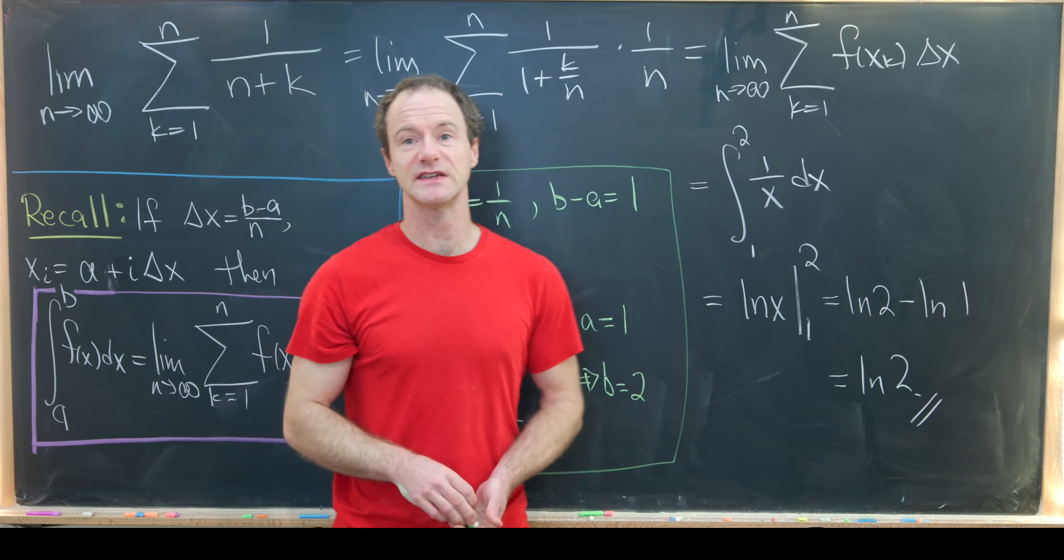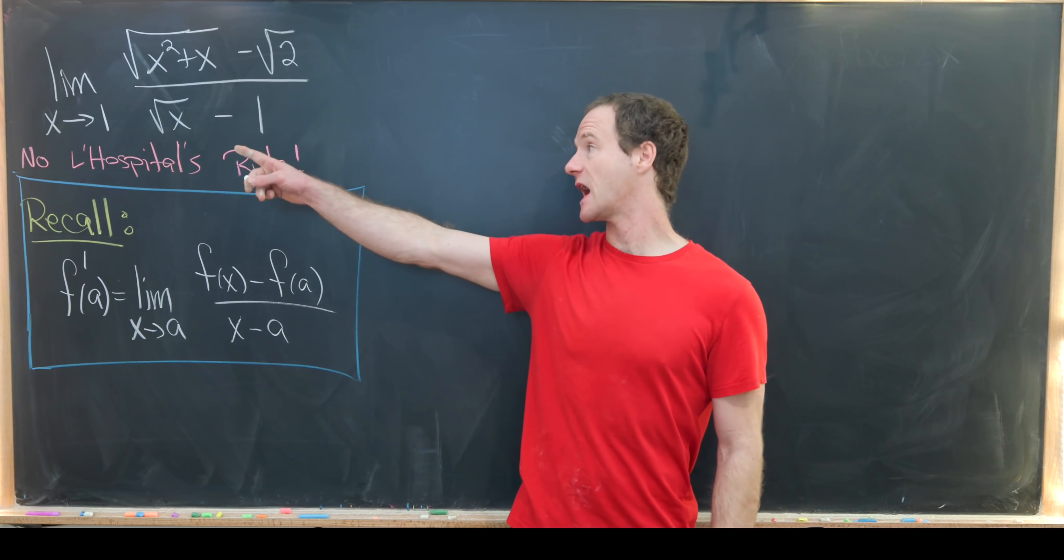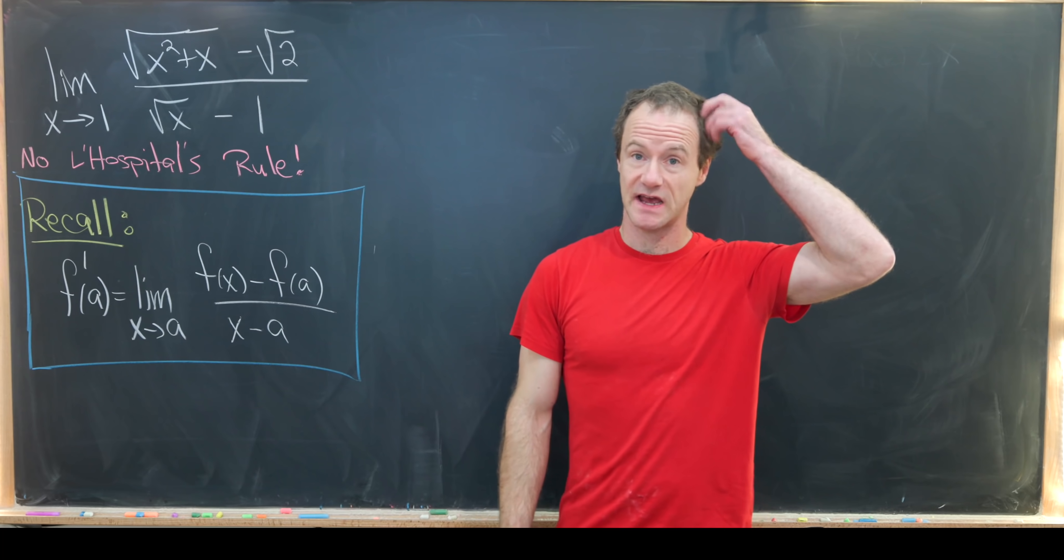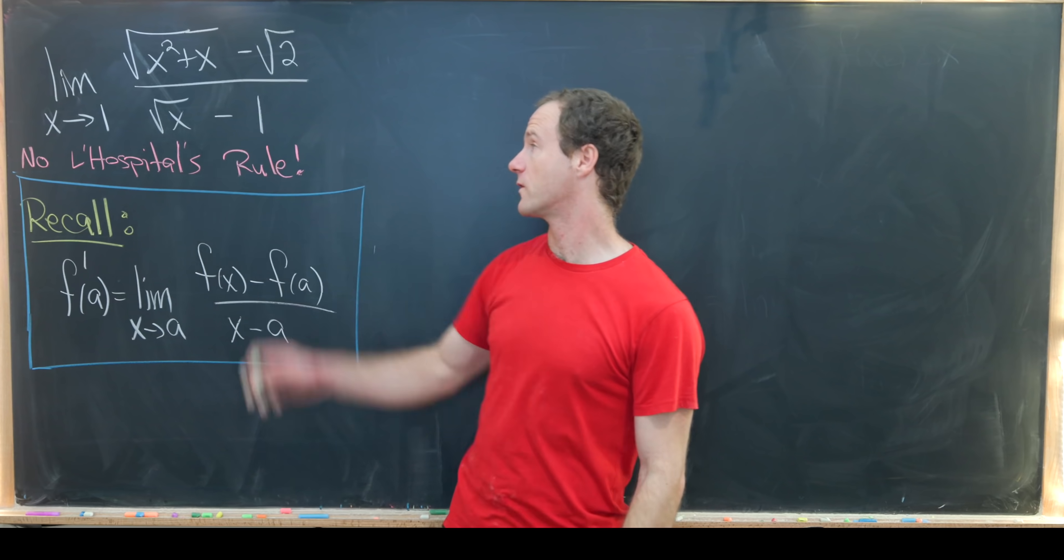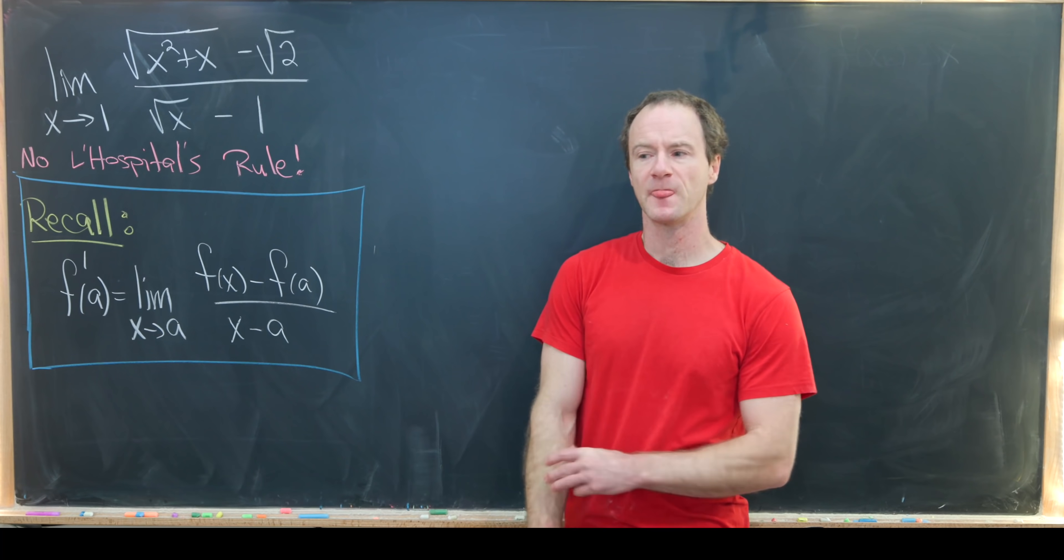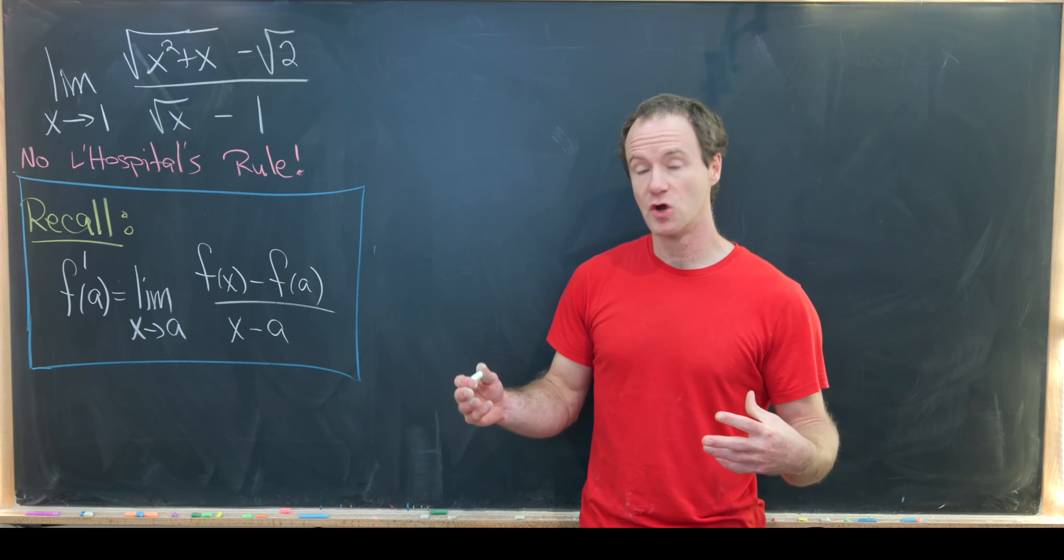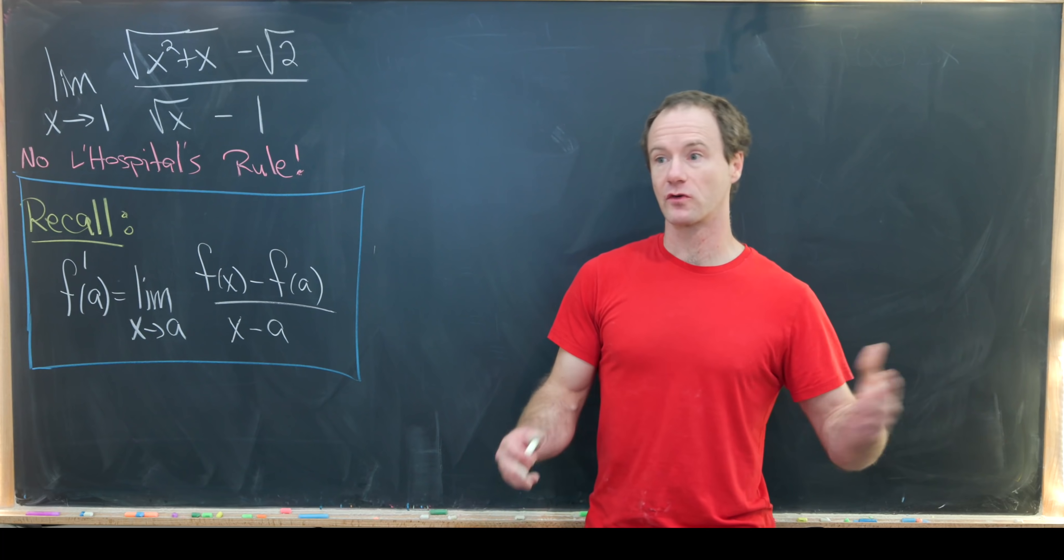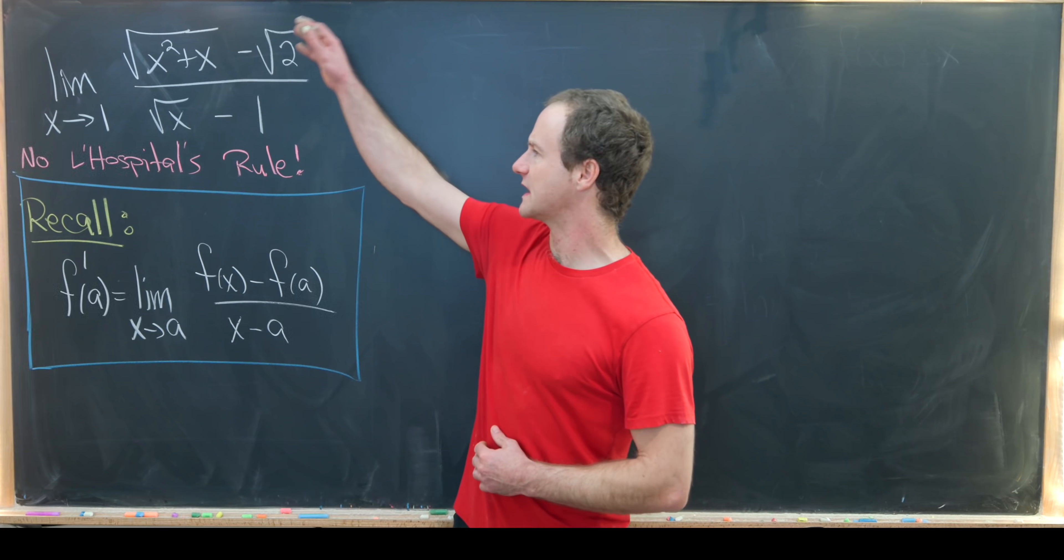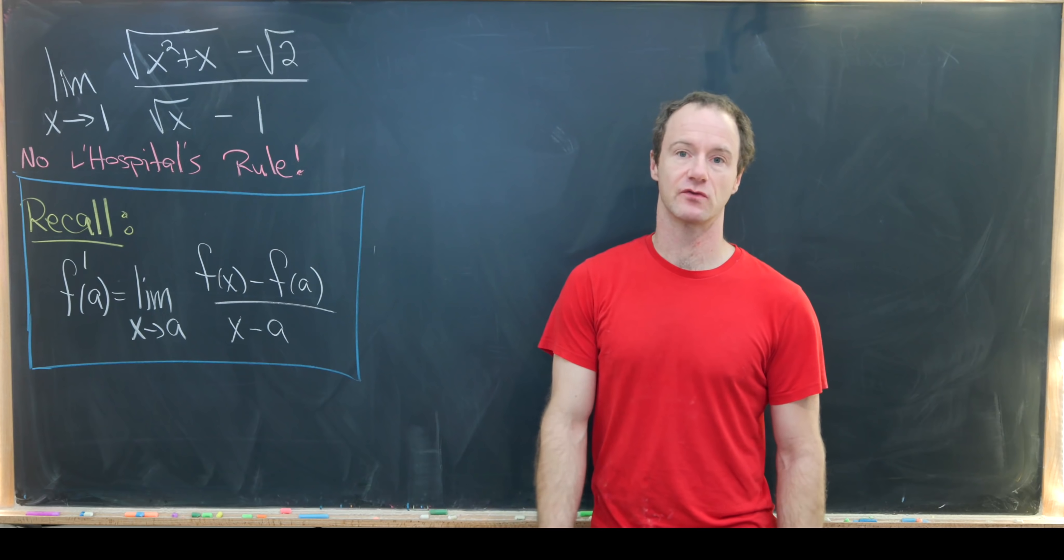Let's maybe get rid of all of this and we'll look at one more example. For our next limit we want to calculate the limit as x goes to 1 of the square root of x squared plus x minus the square root of 2 over the square root of x minus 1, without using L'Hopital's rule. Last time we used the trick of noticing that our limit was actually an integral via the definition of the definite integral. And here we want to relate our limit to a derivative using the definition of the derivative.